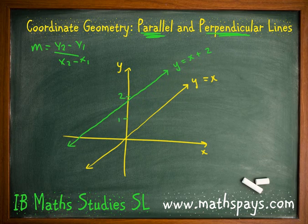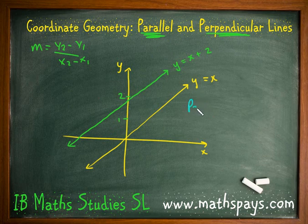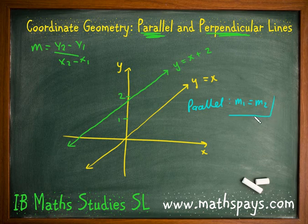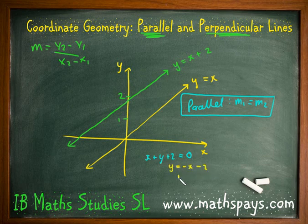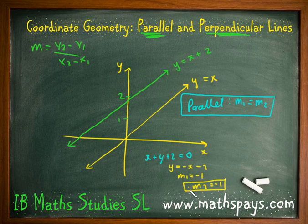So the first thing we're going to learn today is that when you have parallel lines, we can derive the property that m1 is equal to m2, which means their gradients are the same. Now that becomes quite handy because you'll get questions like this: x plus y plus 2 equals 0, and they might say find the gradient of the line that is parallel to that one. If it's parallel, we rearrange to get y equals negative x minus 2, therefore the gradient equals negative 1, and therefore the second gradient will also equal negative 1 because the lines are parallel.